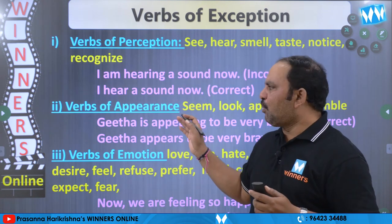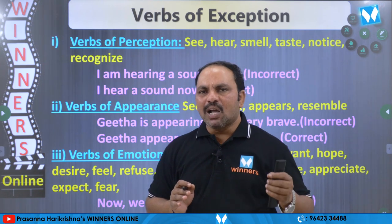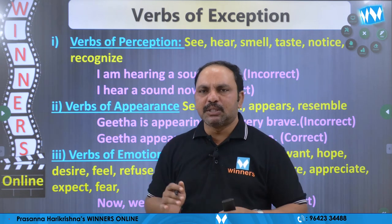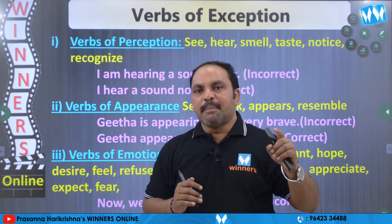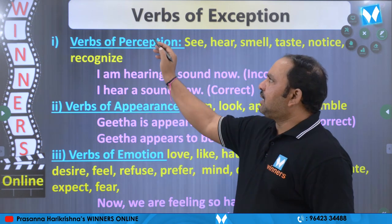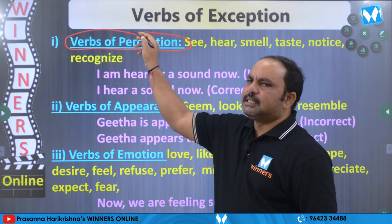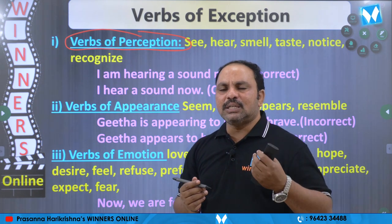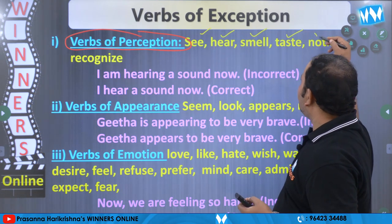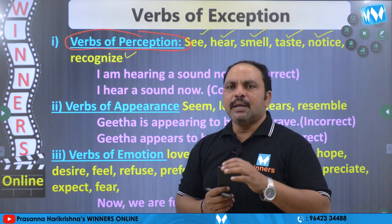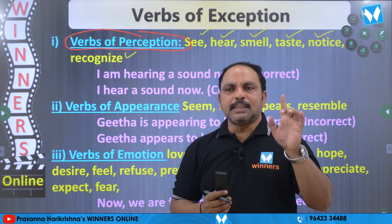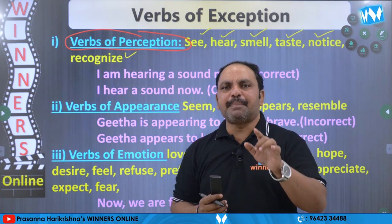Manam ceppaboyedhi vantti verbs ni present continuous tense lo vaadakundi, simple present tense lo vaadaali. Mothatadhi: verbs of perception — perception ante grahanashakti. Grahinchhadaaniki sammandhinche verbs: see, hear, smell, taste, notice, recognize. E verbs ni present continuous lo vaadakundi, simple present tense lo vaadataru.